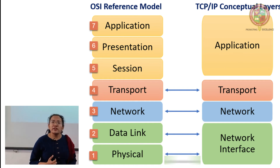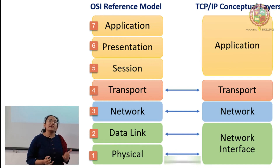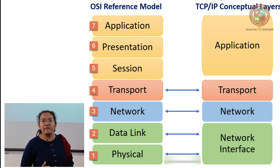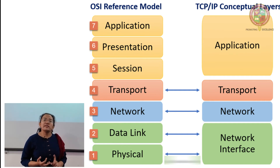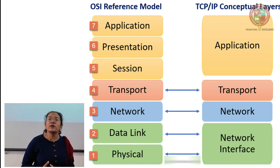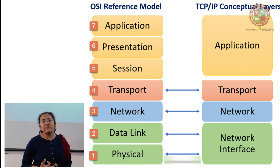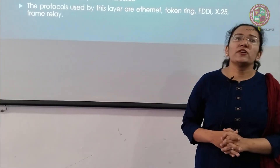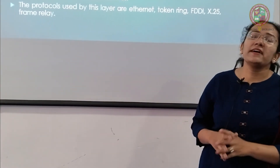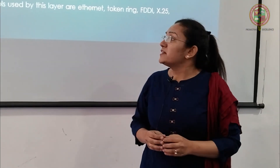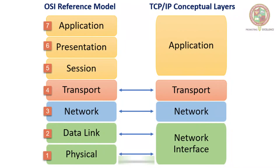The network access layer is a combination of the physical layer and data link layer from the OSI model. It has the same functionality as both — transmitting data with proper flow control, error-free, in bit format or frame format. It is the bottommost layer of the TCP model.